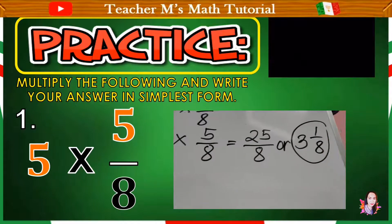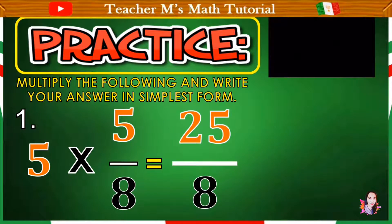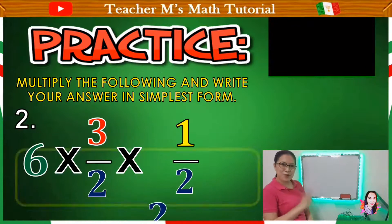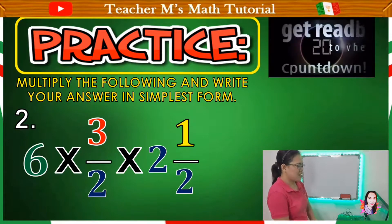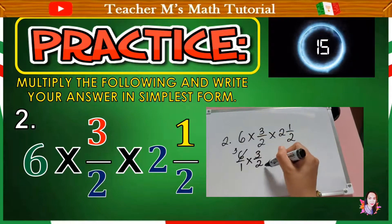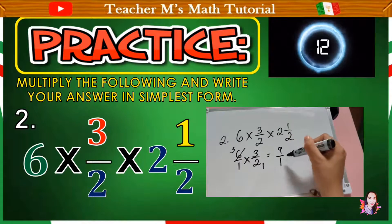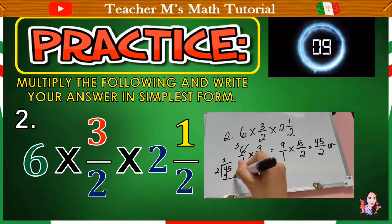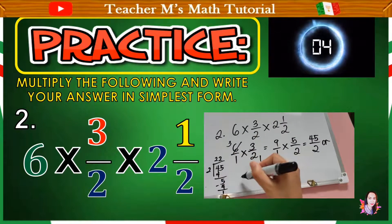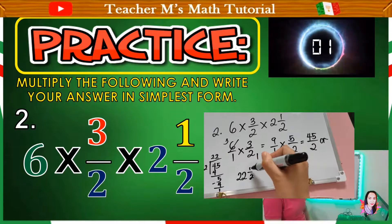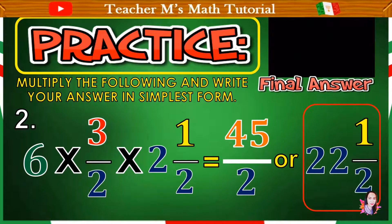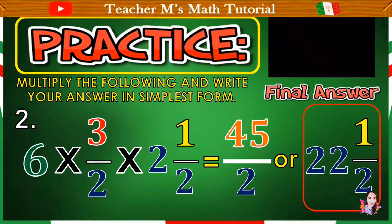Time's up! Let us check your answer. The answer is 25 over 8 or 3 and 1 over 8. Number 2. Time's up! The answer is 45 over 2 or 22 and 1 over 8.